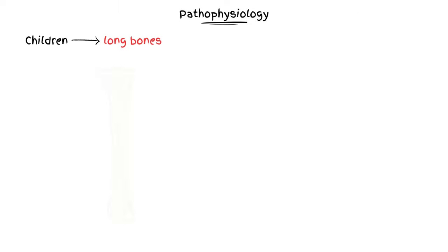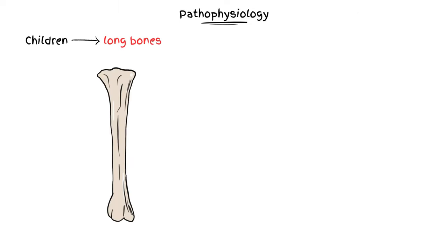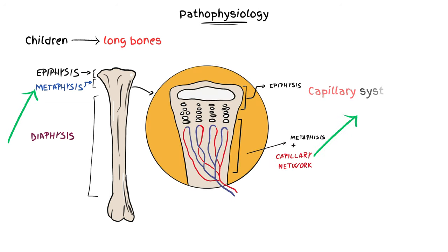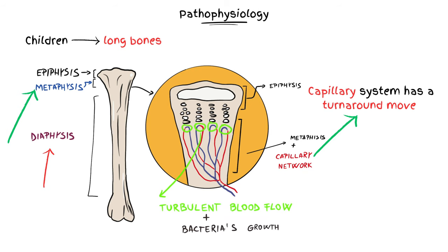Usually for children, the long bones are affected. More precisely, the metaphysis is generally involved. At this level, the capillary system has a turnaround move in its way to nourish the diaphysis. This U-turn is the proper spot for a turbulent blood flow, which will favor the microorganism's deposition.